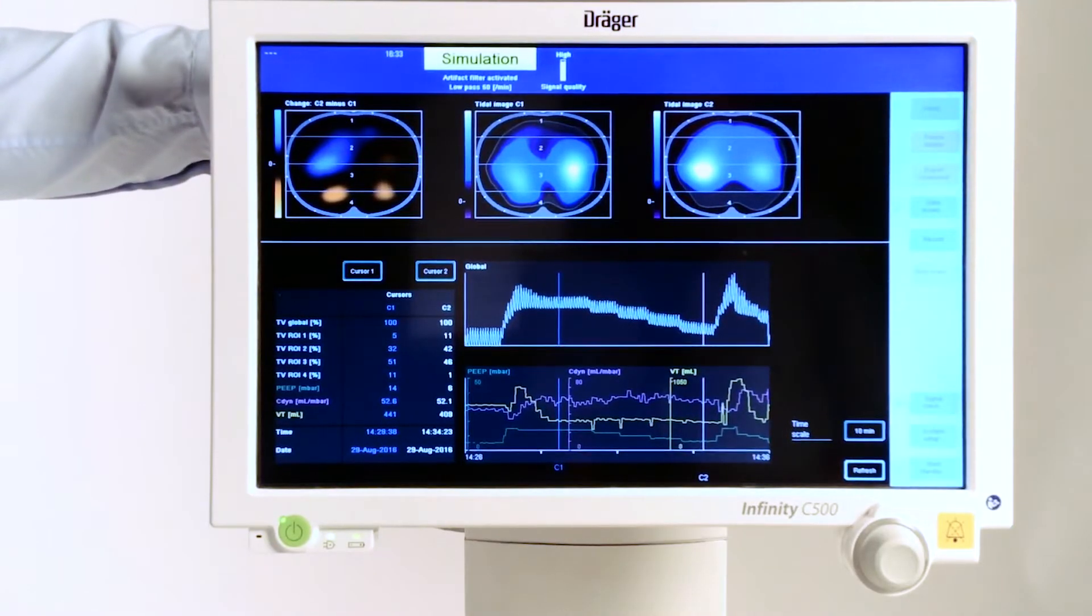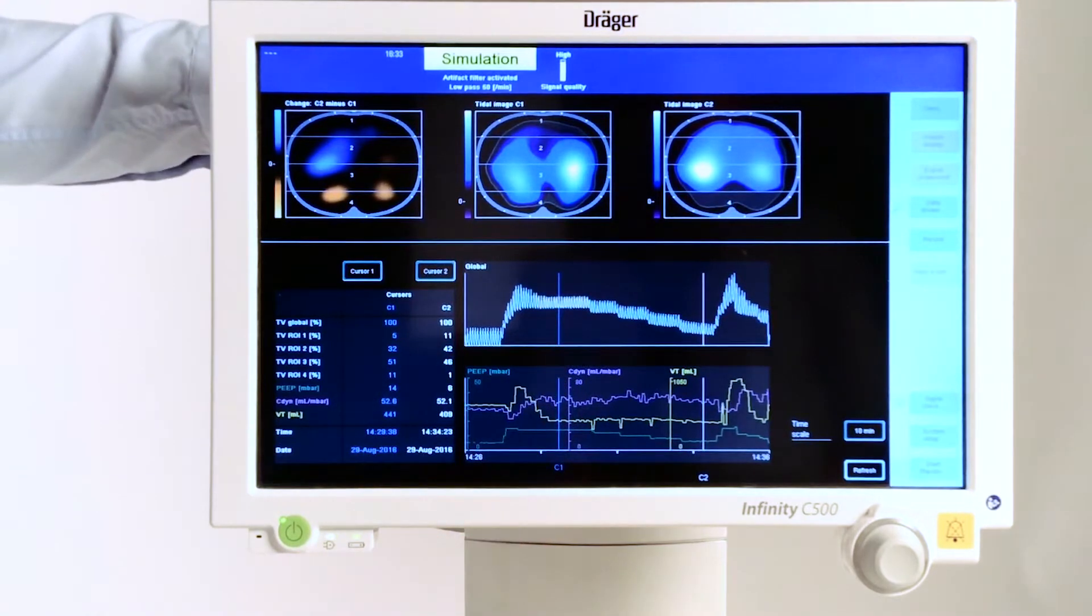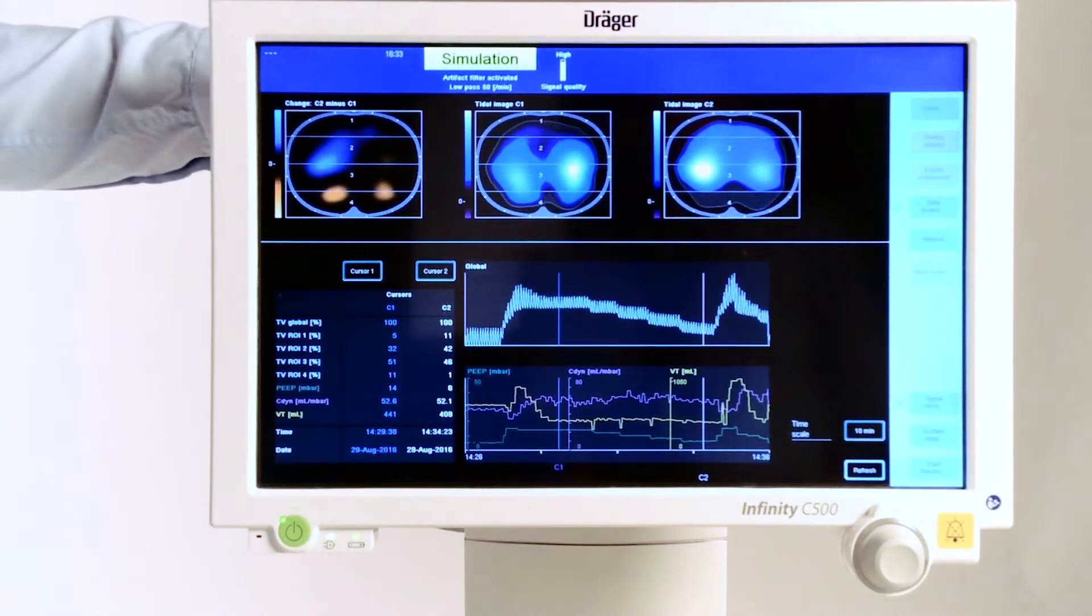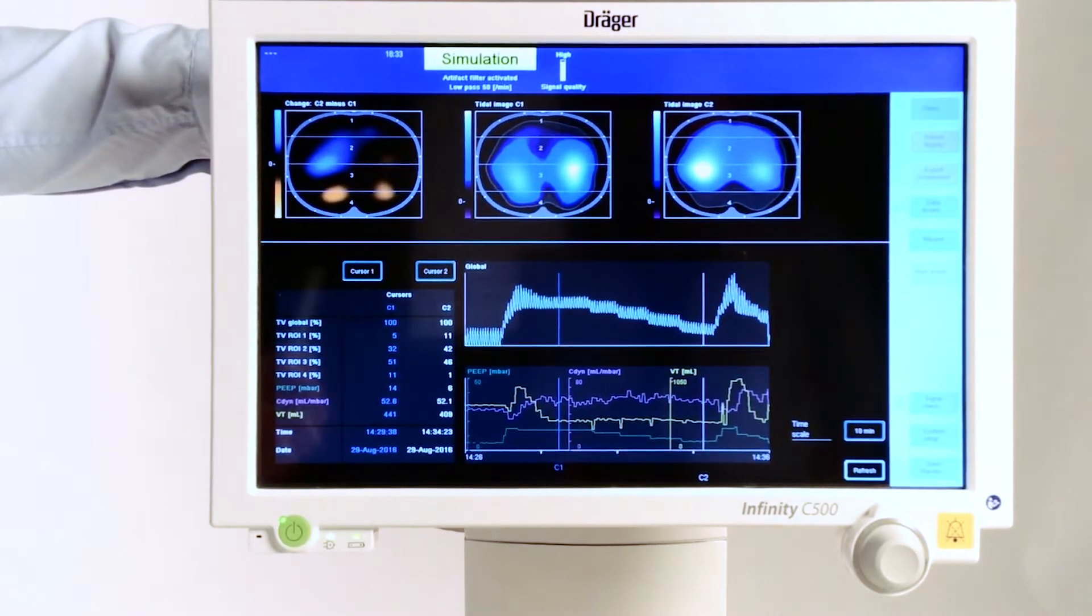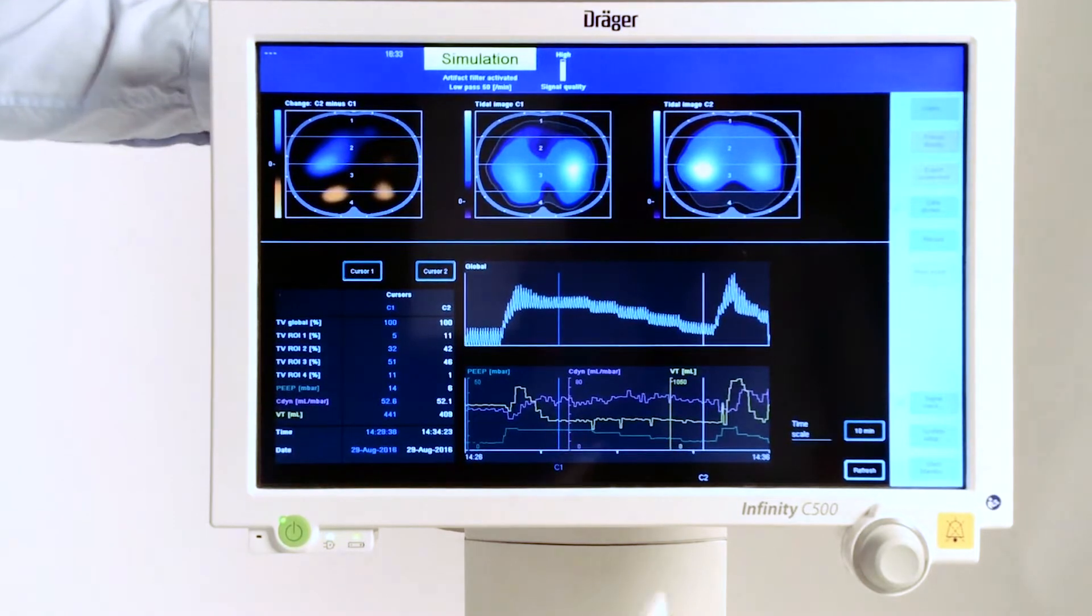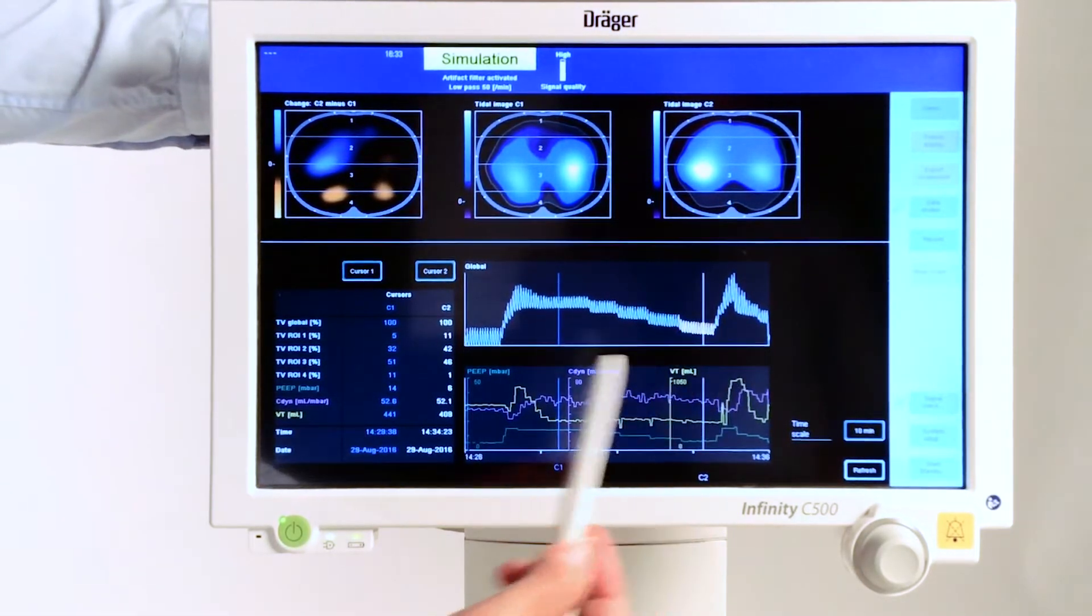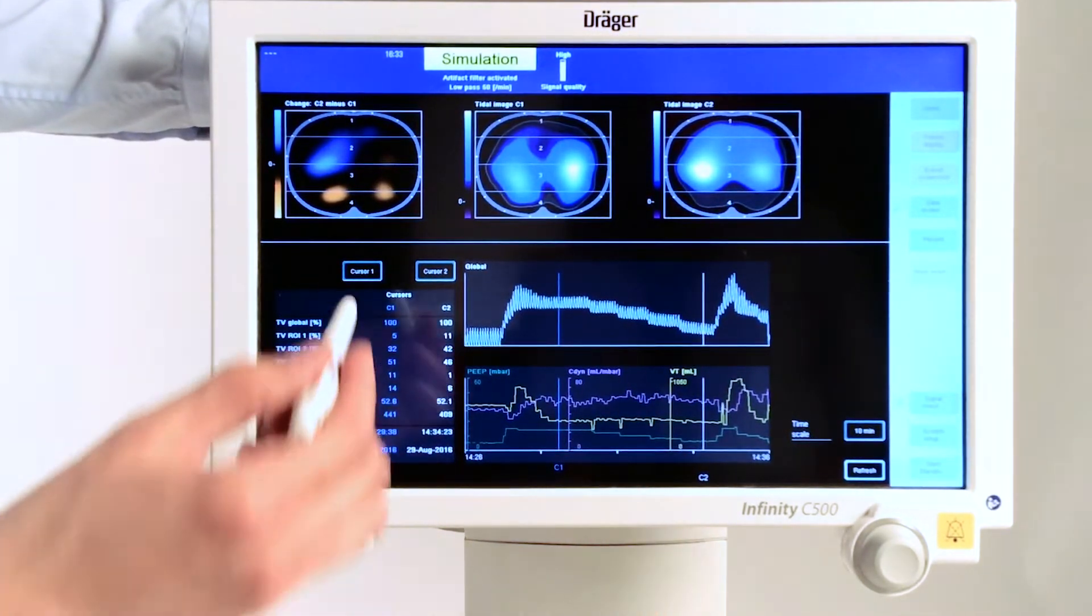In our second video, we set our reference at the highest PEEP level in order to assess the onset of derecruitment. Now, in order to assess possible overdistension, we have to pick a reference level where we do not expect to see any signs of overdistension. And that will be the condition at the lowest PEEP level. And this is where we set our new reference.